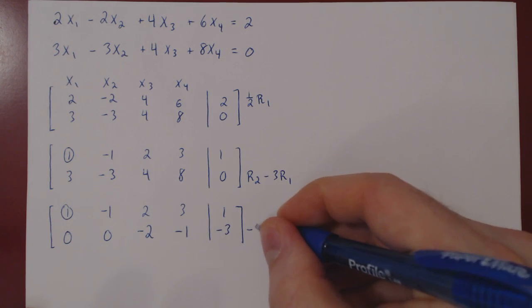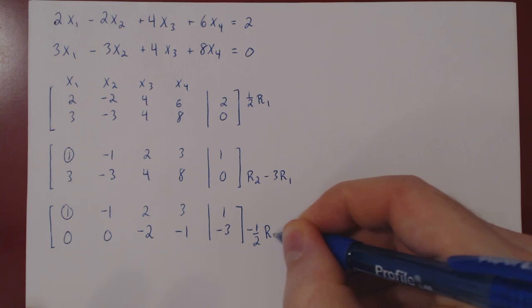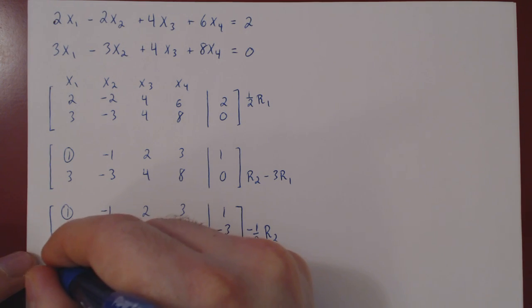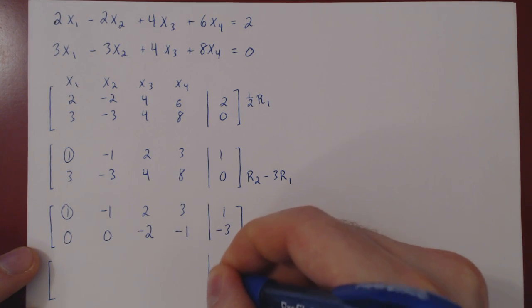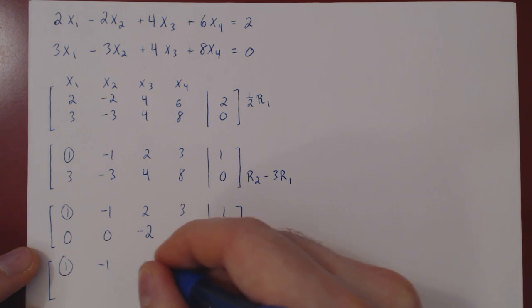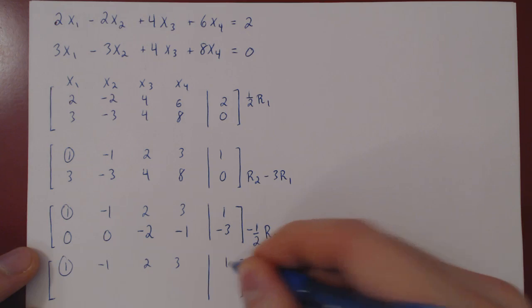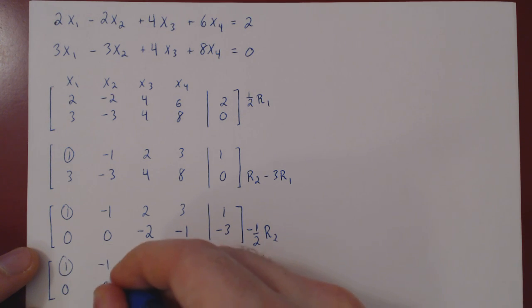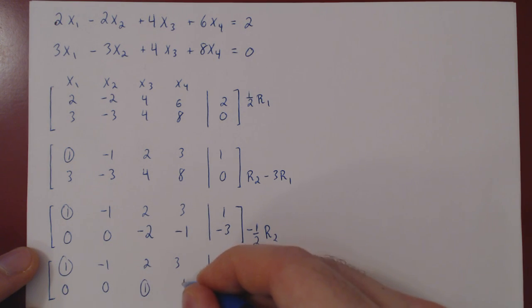So we do negative 1 half of row 2, and we obtain our second leading one this way. We copy row 1, multiply by negative 1 half, we have our second leading one, positive 1 half, positive 3 half.